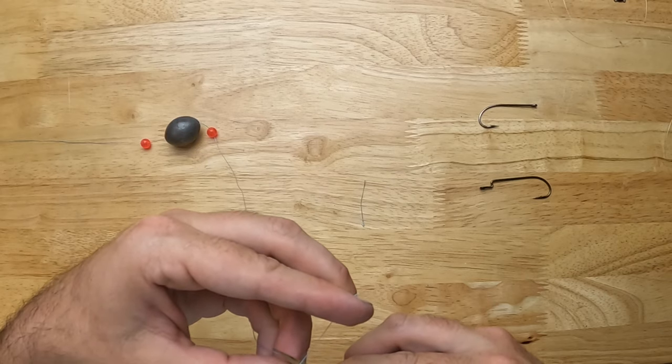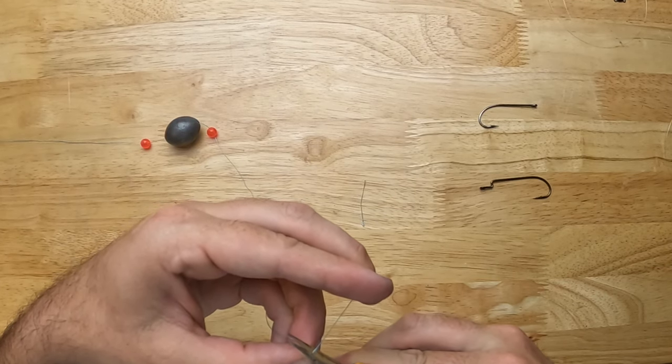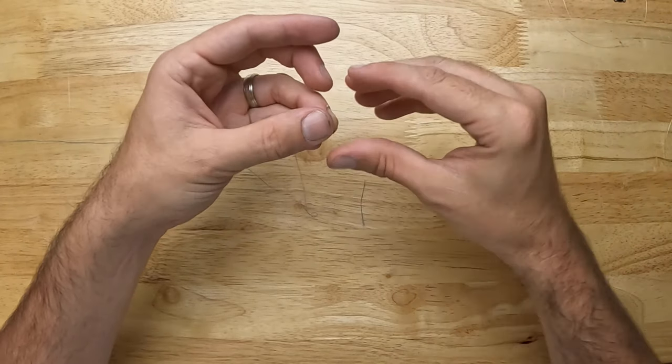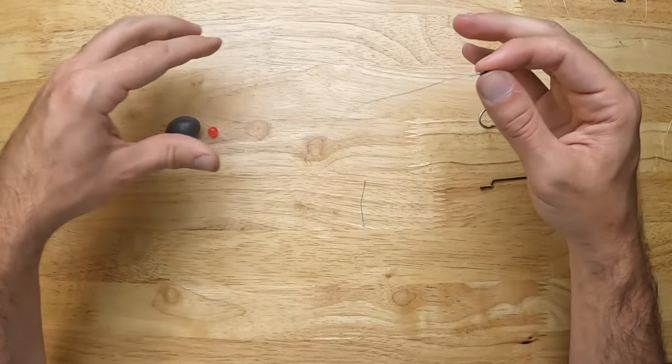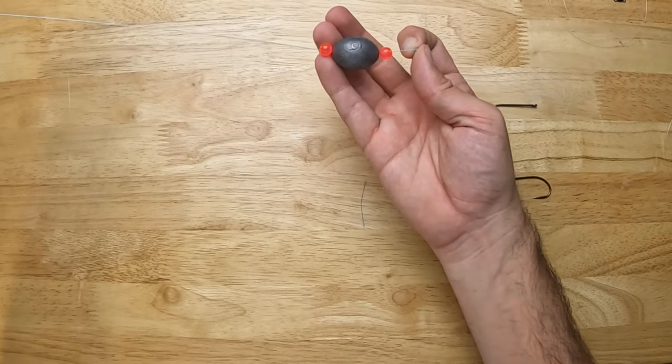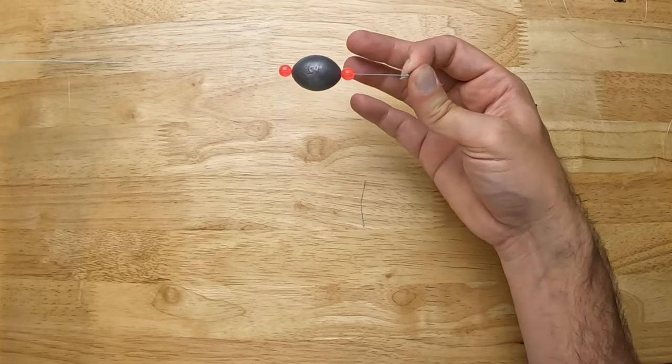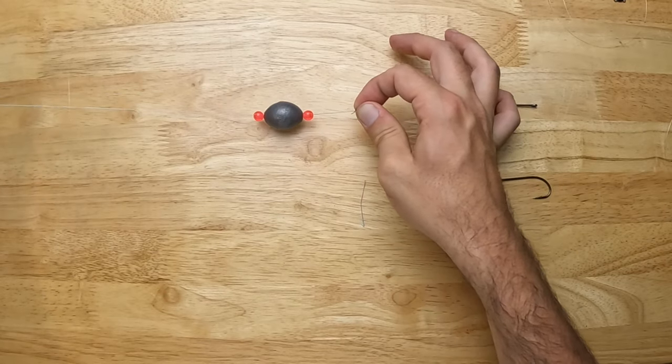There we have it. We have our basic setup: beads, weight, all attached to the main line right to our swivel, and now we're ready for our leader.